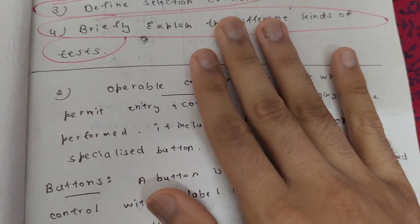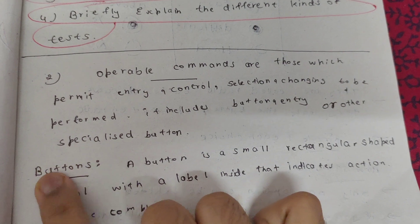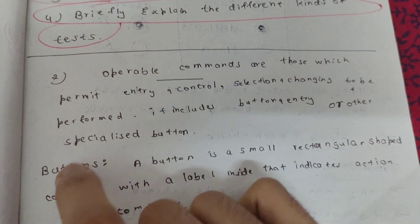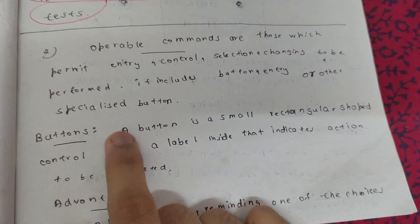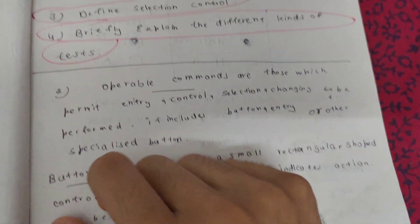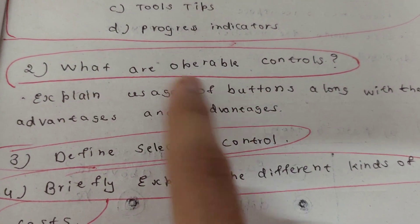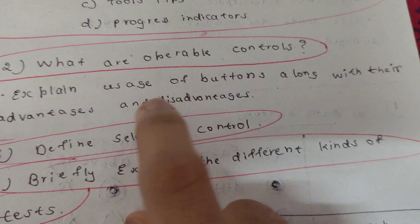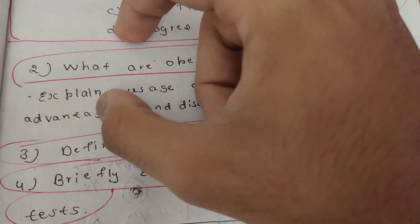For operable commands, a button is one small part. A button is not itself the entire operable command — it is one of the main parts that we regularly use. So the question is: what are operable commands, and explain the usage of buttons along with their advantages and disadvantages.